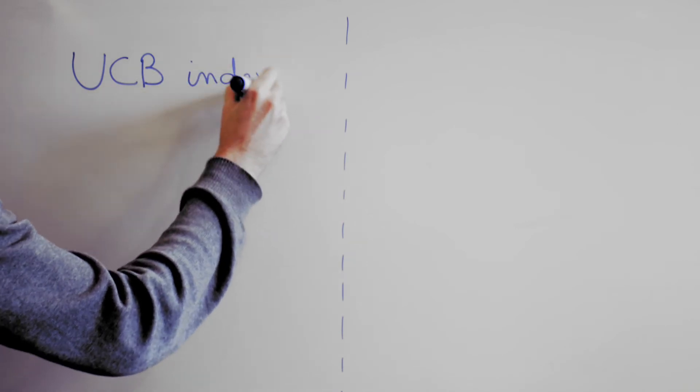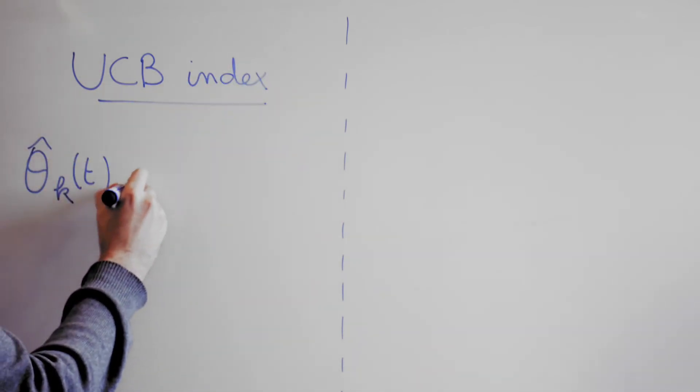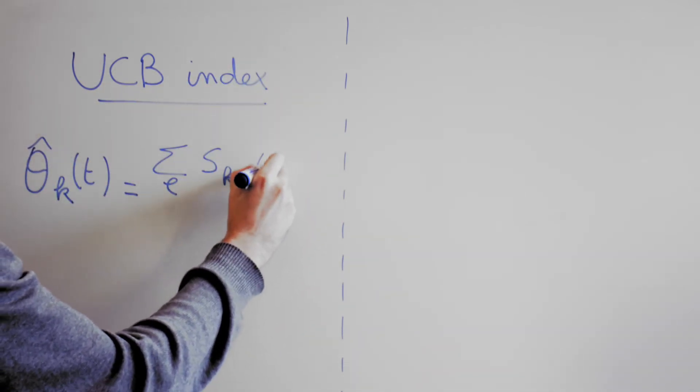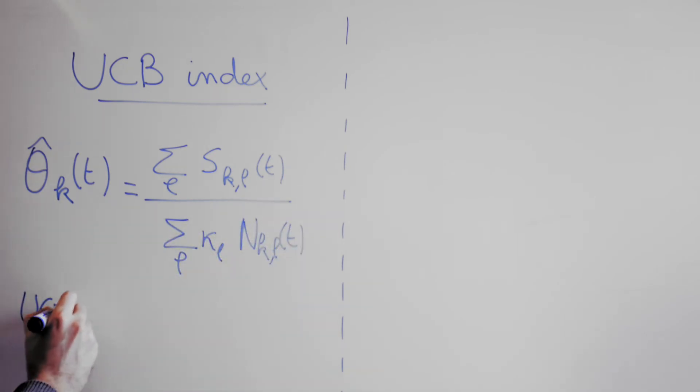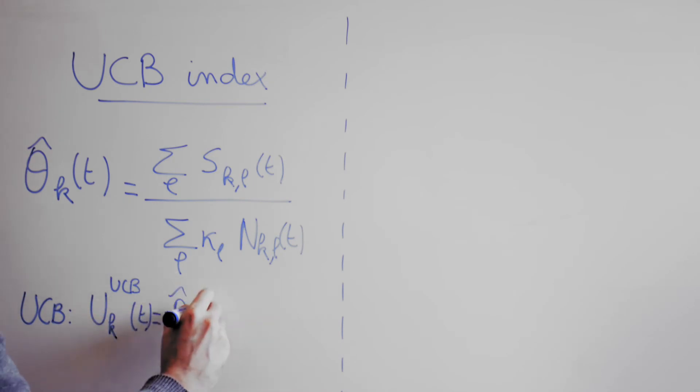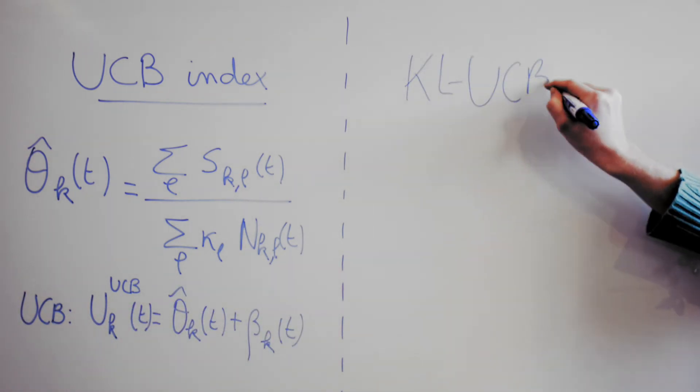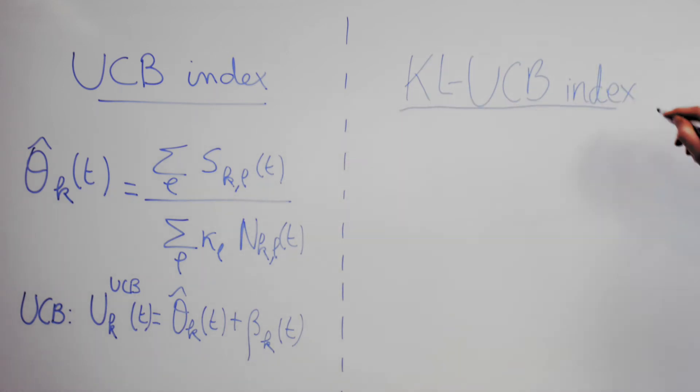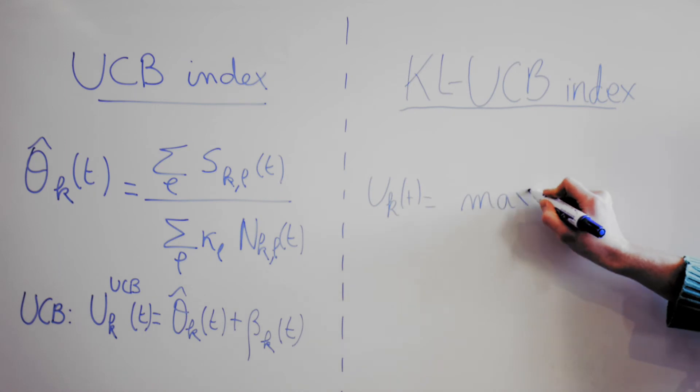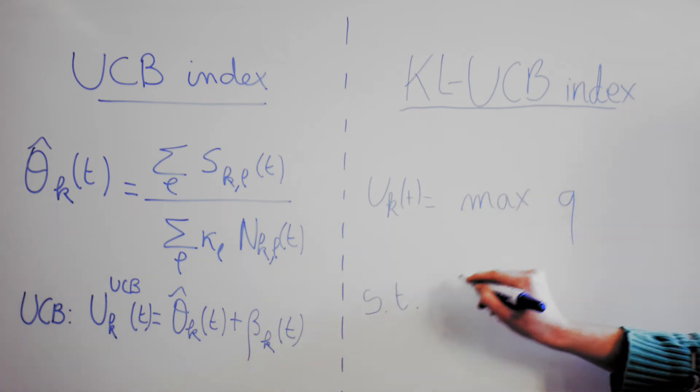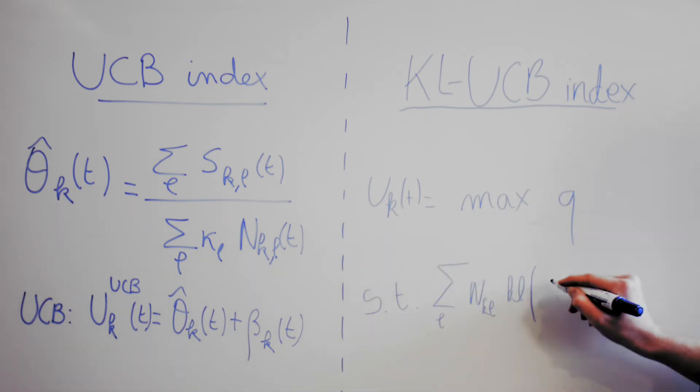We construct an aggregate estimator theta hat using a combination of all observations that uses the prior knowledge of parameters kappa. Then, we build confidence regions of two kinds, one UCB-like using Azuma Hoeffding, and one KL UCB-like based on previous work of Kappa et al. 2013 and Maglureanu et al. 2014, defined as the solution of a convex optimization problem.